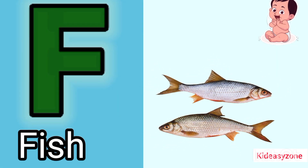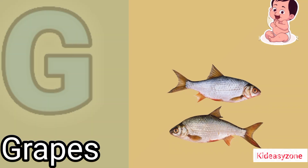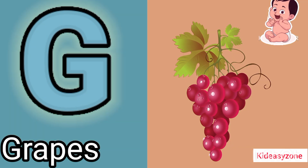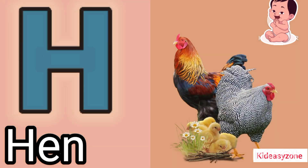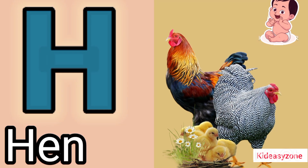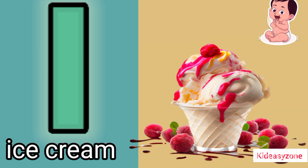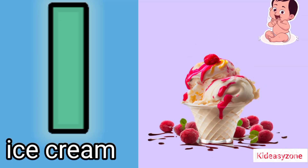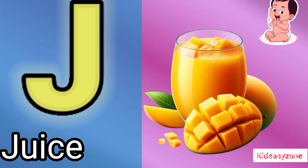F is for fish. G is for grabs. H is for hand. I is for ice cream. J is for juice.